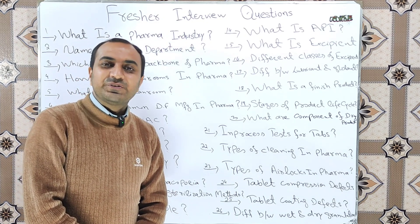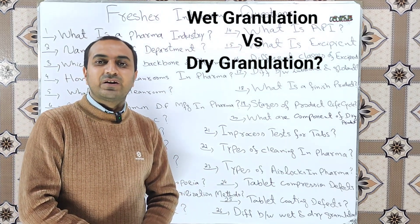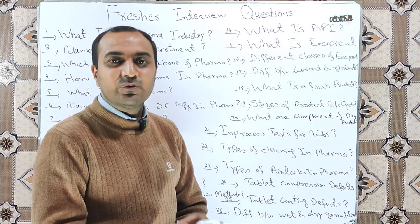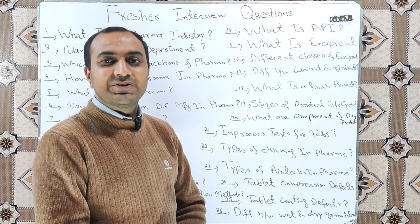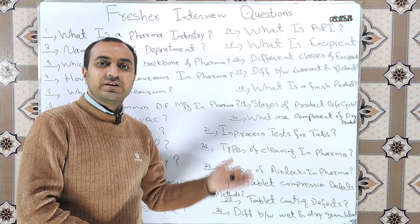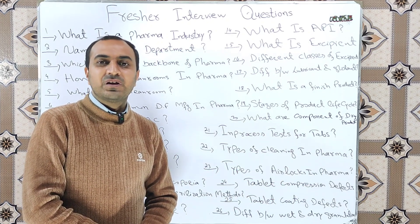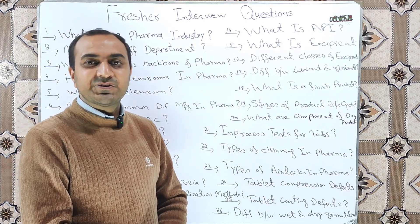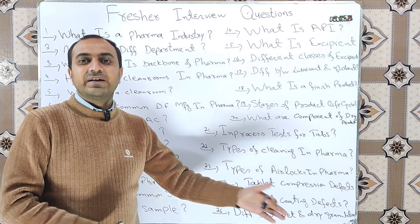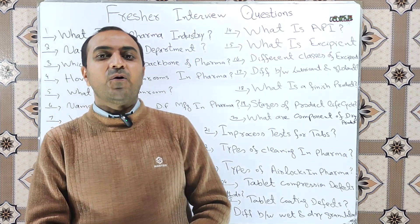What is the difference between wet granulation and dry granulation? Wet granulation is the process where we convert powders into granules by application of a solvent solution or binder solution. In dry granulation, we do not use a solvent or binder solution; we only apply pressure to convert the powders into granules.